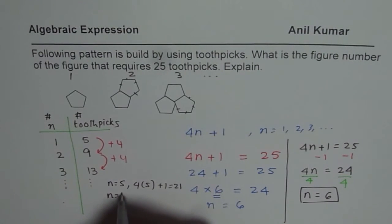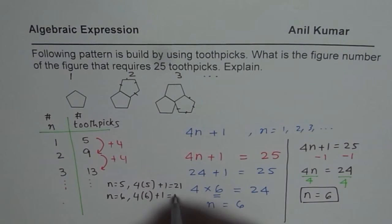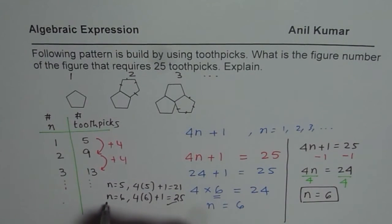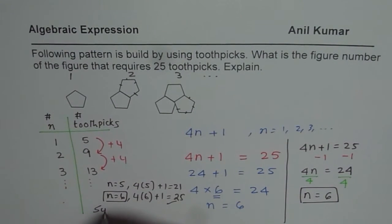Let N be equals to 6. In that case, it will be 4 times 6 plus 1, and that is 25. It is correct. So we can get N equals to 6 in this fashion also. So this method is called systematic trial.